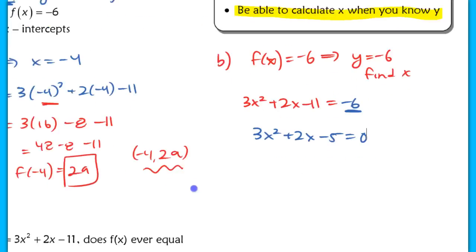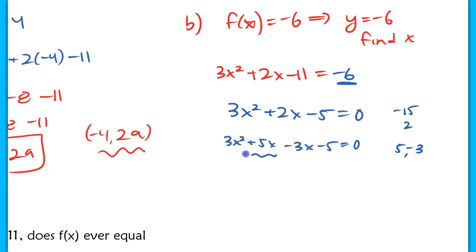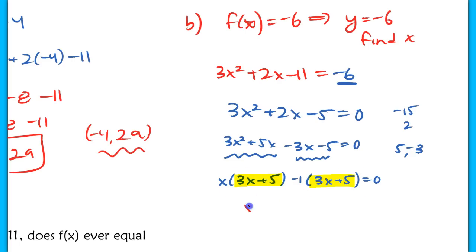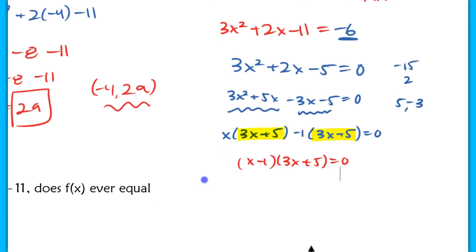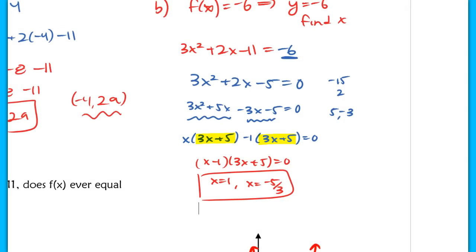What you want to do here is try to factor if you can — don't always jump to the square root method or the quadratic formula. Here we're looking for two numbers that multiply to −15 and add to +2. Those numbers are +5 and −3, so this is factorable. We get 3x² + 5x − 3x − 5 = 0. Factoring out x gives x(3x + 5), and factoring out −1 gives −1(3x + 5). Since both parentheses match, we factor to (x − 1)(3x + 5) = 0, giving solutions x = 1 and x = −5/3. This makes sense because in a quadratic, a given y value can have two different inputs.